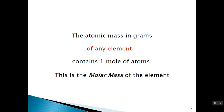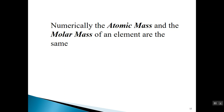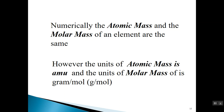The atomic mass in grams of any element contains one mole of atoms. Whatever the atomic mass of the element is, if you express that in grams, that mass contains one mole of atoms. That mass is called the molar mass of the element. The molar mass and the atomic mass are numerically the same, but the units are different — atomic mass is in AMU, and molar mass is in grams per mole.